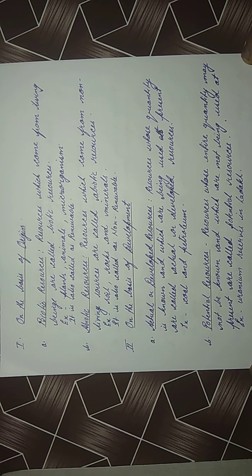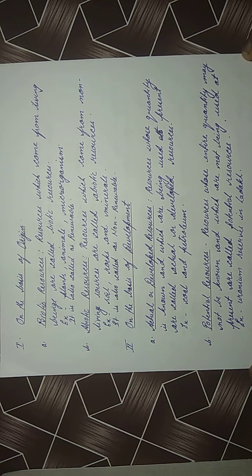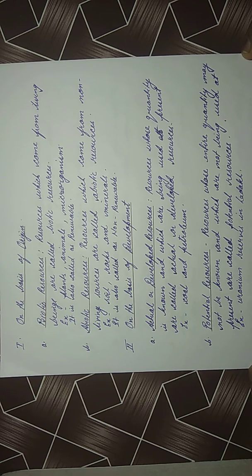On the basis of origin, it is subdivided into biotic resources and abiotic resources. From the word 'biotic,' it denotes that it belongs to living things. So we can say that resources which come from living beings are called biotic resources. They are also called renewable resources. For example, plants, animals and microorganisms.